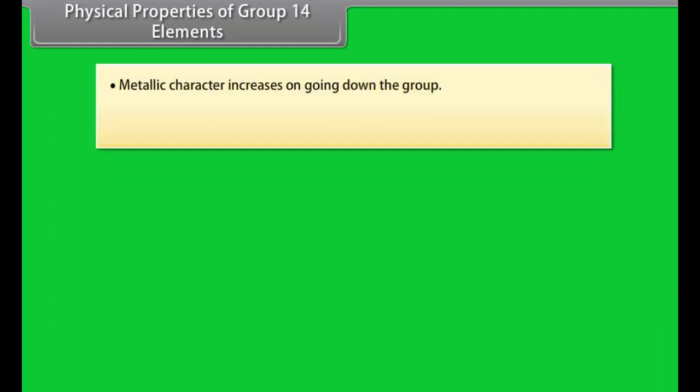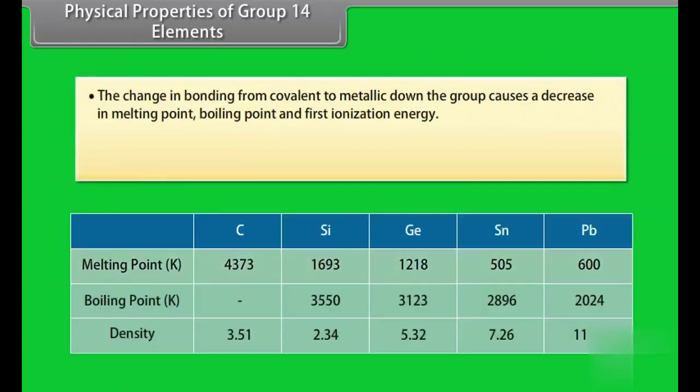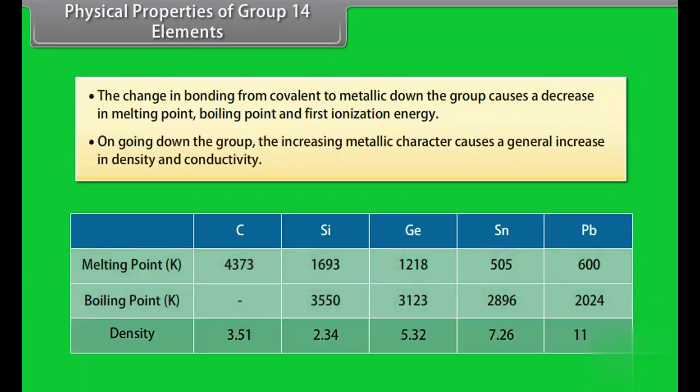Physical properties of group 14 elements. Metallic character increases on going down the group. The structures change from giant molecular lattices in carbon and silicon to giant metallic lattices in tin and lead. The change in bonding from covalent to metallic down the group causes a decrease in melting point, boiling point and first ionization energy. On going down the group, the increasing metallic character causes a general increase in density and conductivity.